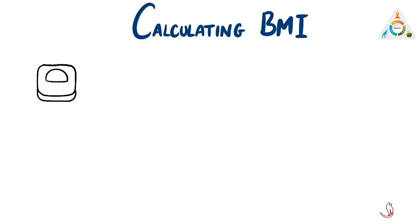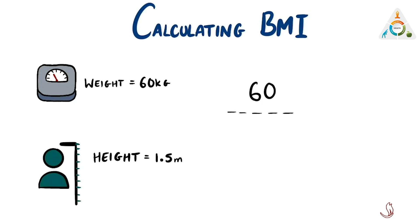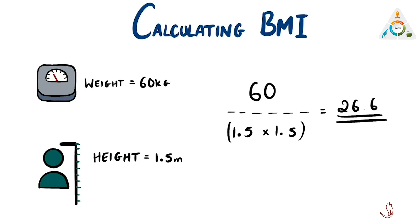Let's work through an example. If I weigh 60 kilos and my height is 1.5 meters, my BMI would be 60 divided by 1.5 times 1.5, which is 26.6. As we have already mentioned, anything over 25 is classified as overweight.